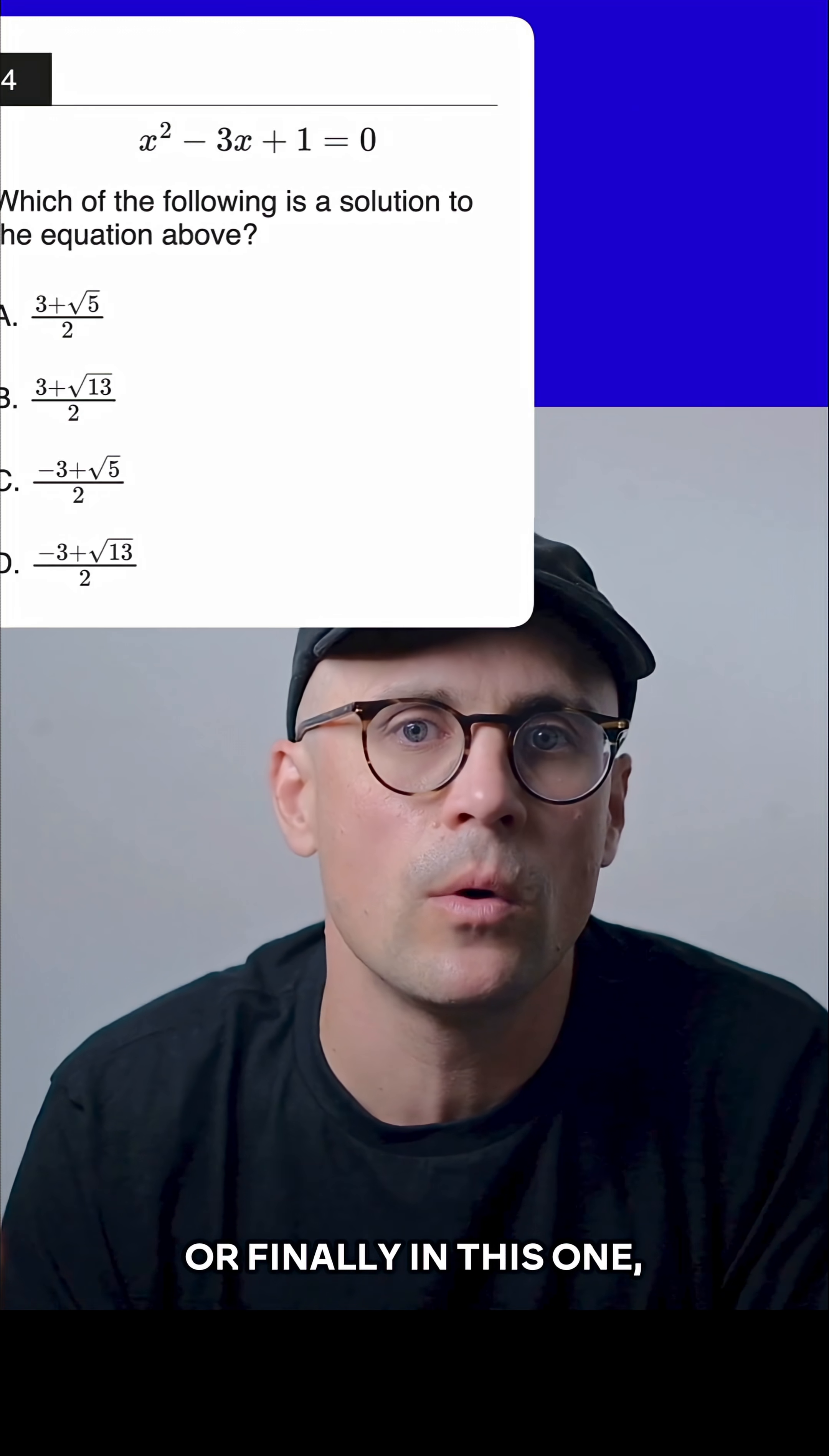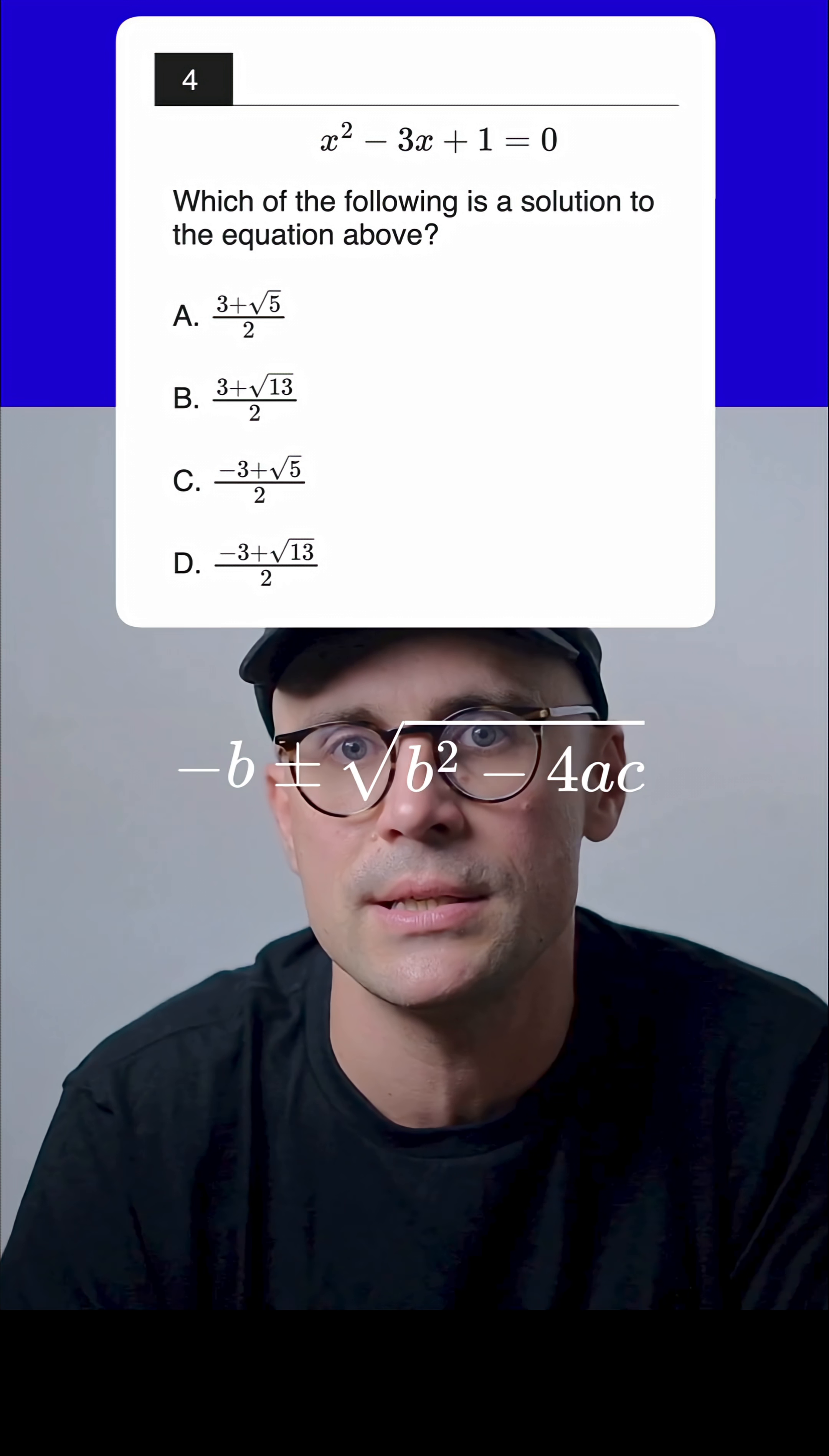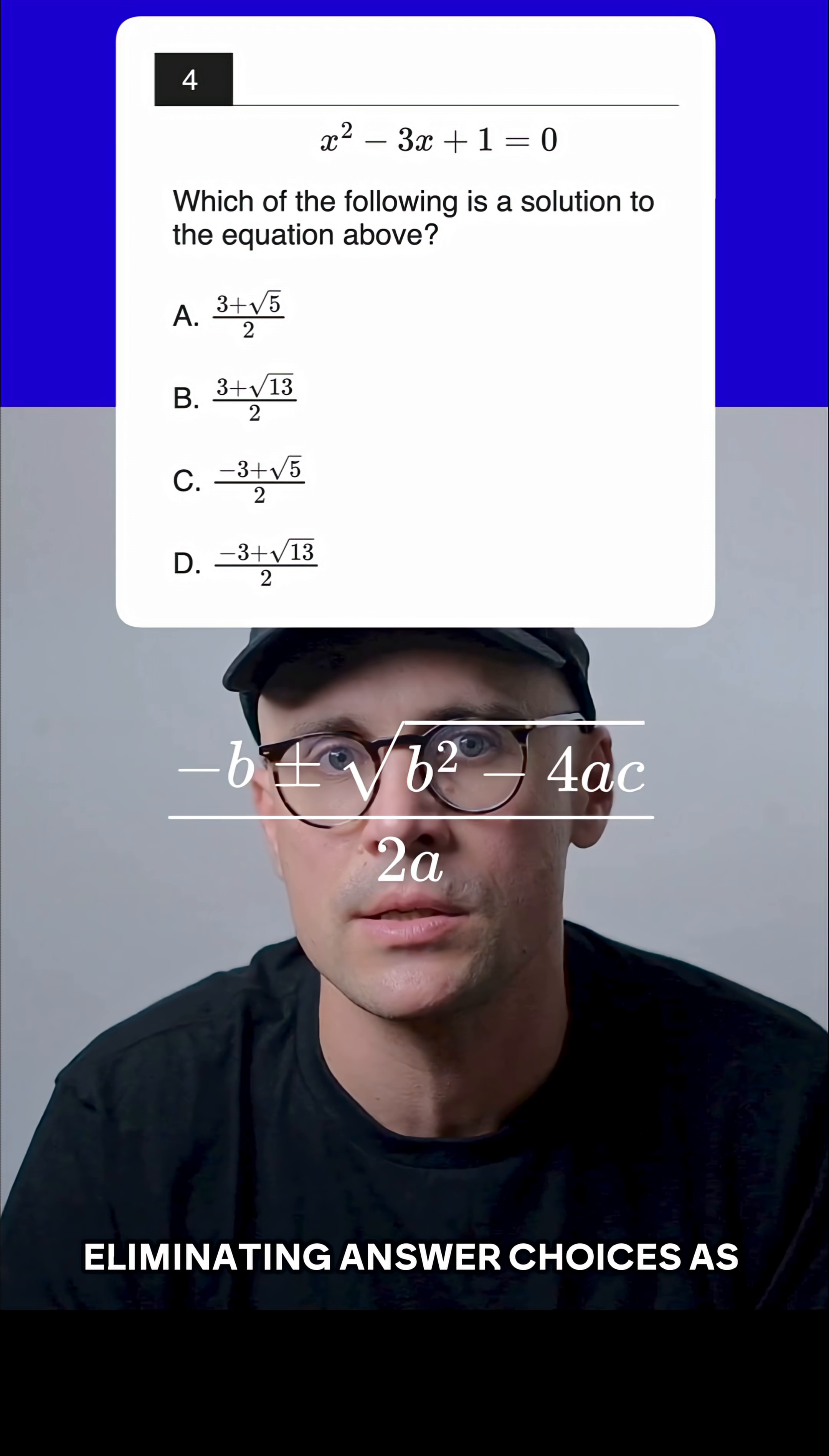Or finally in this one, where if you know your quadratic formula well, you'll recognize that the answer choices are all in the form minus b plus the square root of b squared minus 4ac all over 2a. So we can just calculate those components one at a time, eliminating answer choices as we go.